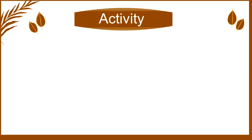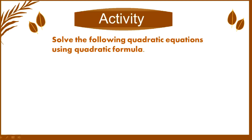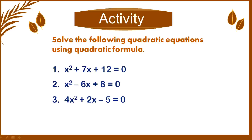For your activity, solve the following quadratic equations using the quadratic formula. 1. x² + 7x + 12 = 0. 2. x² − 6x + 8 = 0. 3. 4x² + 2x − 5 = 0. Please take your time to answer in your paper, or drop your answers in the comment section below. Thank you for watching.